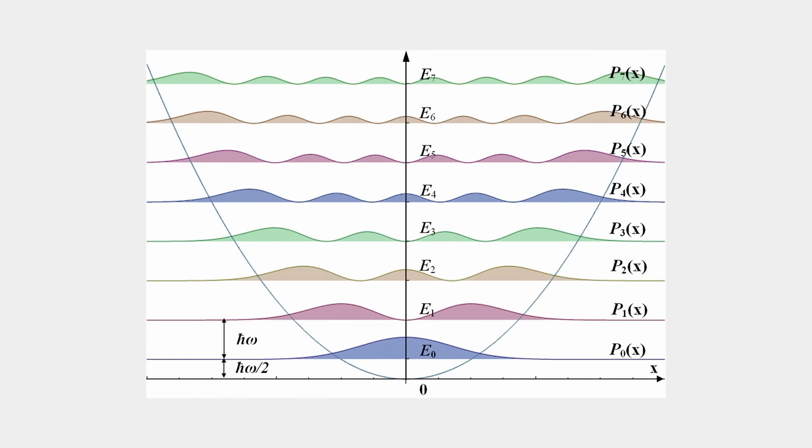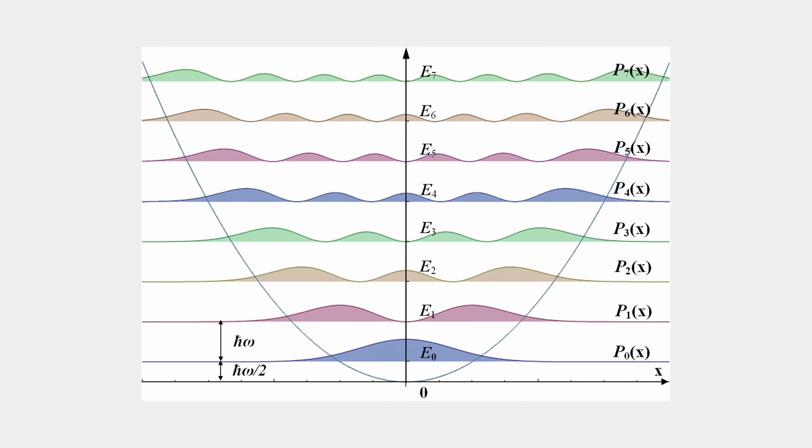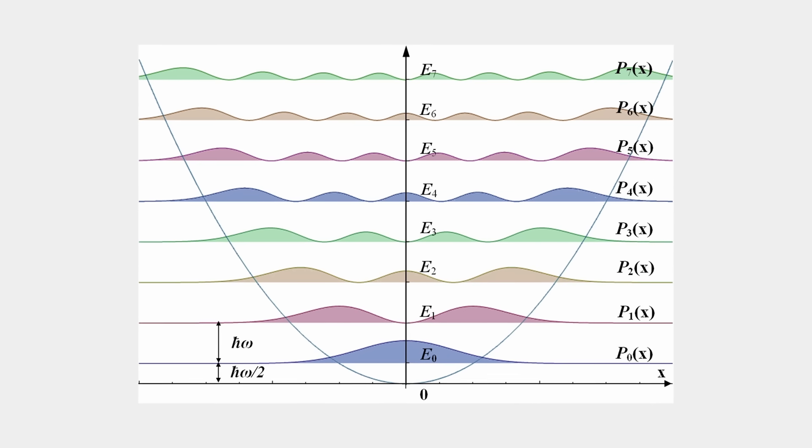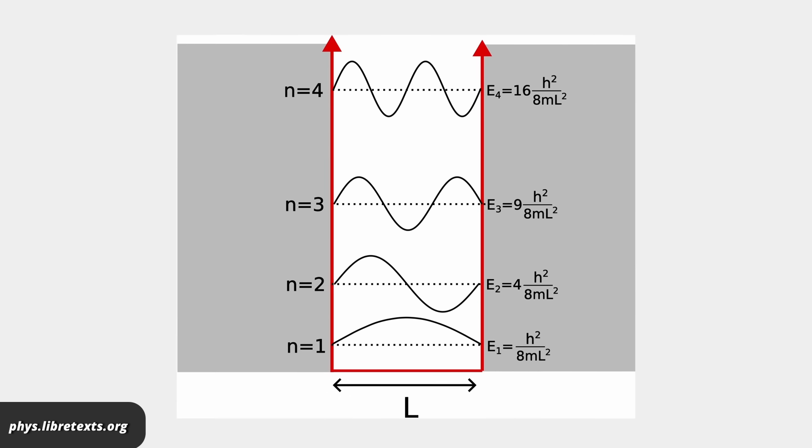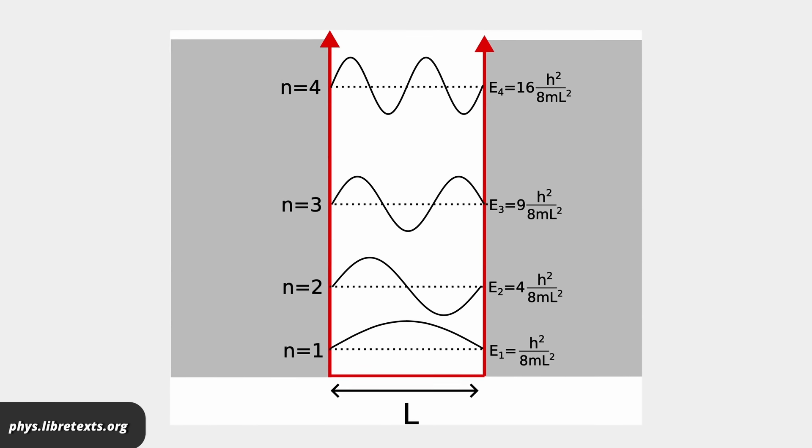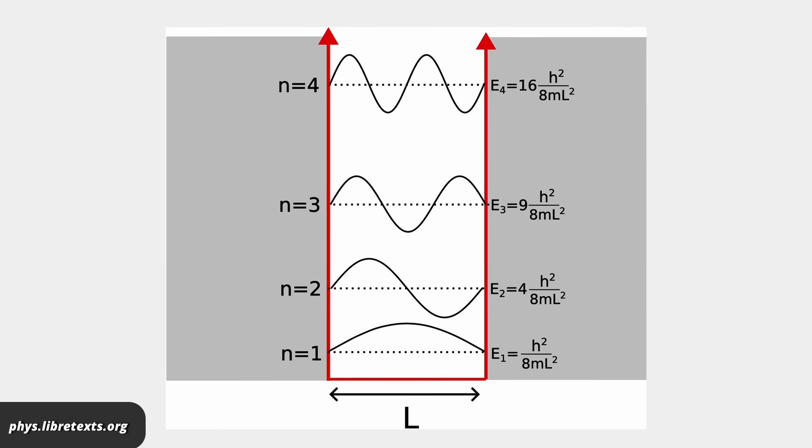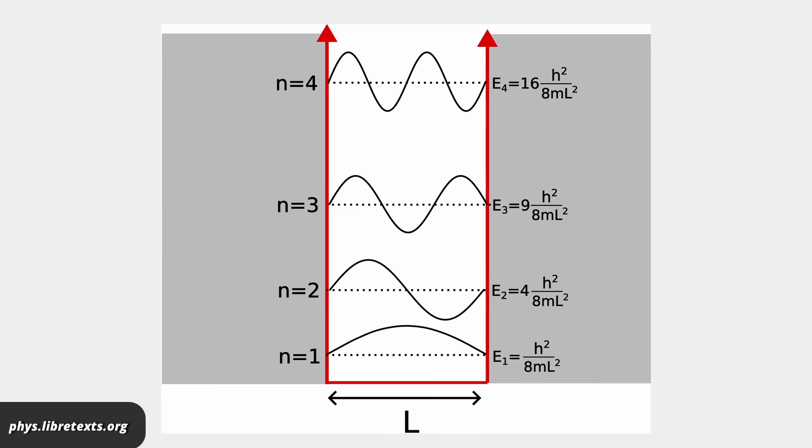But if the particle has quantum properties, then it has a wavelength. And the wavelength needs to fit into the potential. This is easiest to understand if the potential has hard walls, like it's a box—then there are standing waves that fit in and the rest doesn't. This happens for any potential. And the important thing is that a quantum particle cannot not wave. It must wave. And if it waves, it has energy.